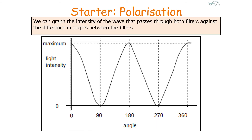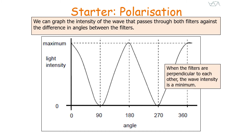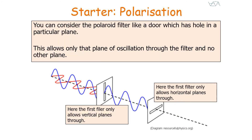We can graph the intensity of the wave passing through both filters against the difference in angles between them. When the filters are perpendicular, wave intensity is at a minimum because all of the wave is blocked out. When the filters are parallel, wave intensity is at a maximum because all of the wave in one plane of oscillation can pass through both filters. You can consider the polaroid filter like a door with a hole in a particular plane, allowing only that plane of oscillation through. So if the first filter allows only vertical planes and the second allows only horizontal planes, nothing will get through.